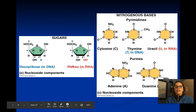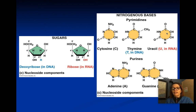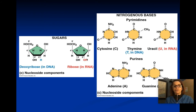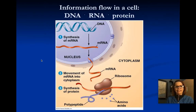These are the pyrimidines — they just have the one ring. I always remember it because the word pyrimidine has a Y in it, and so does cytosine and thymine. Uracil doesn't fit, but whatever. Adenine and guanine are the purines, and they have two rings. The two different sugars look very similar — notice the hydroxide group present in one that's not in the other.